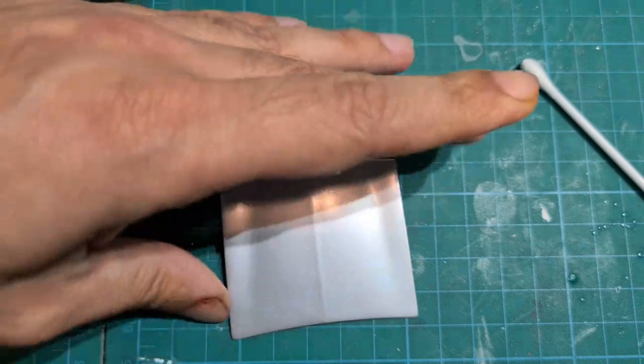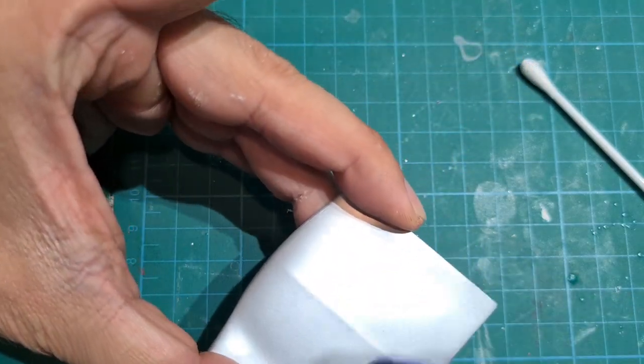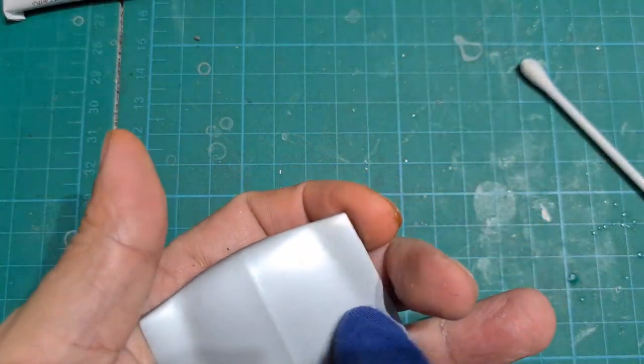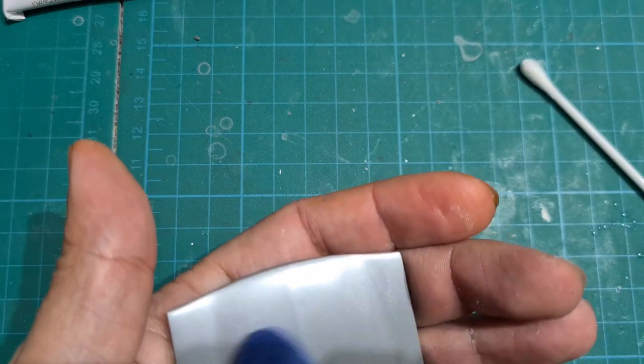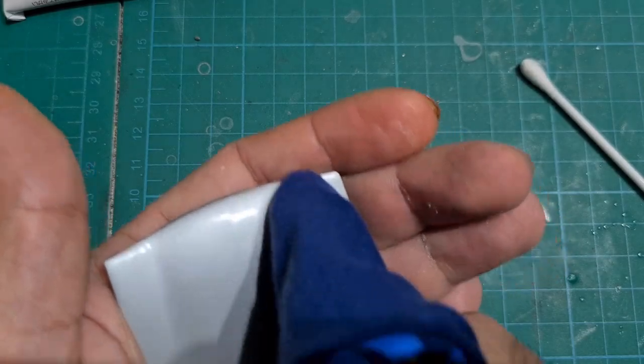So doing the coarse compound again, the fine again, and the finish polishing compound one more time. I'm just going to show you that in 8x speed because you've already seen it.